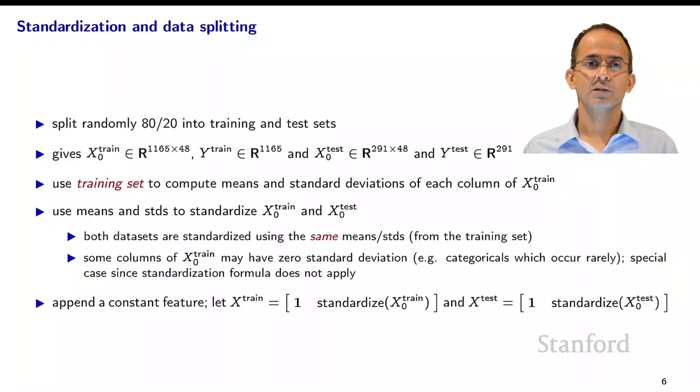Now, when we do the standardization and the data splitting, we do this in a particular way. So we split the data randomly 80-20, 80 percent for training and 20 percent for test. And that gives us an x0 training set and a corresponding y-train, and an x0 test set and a corresponding y-test. Now the way we do standardization is, we use the training set to compute the means and the standard deviations of each of the features. So that means we'll get 48 numbers corresponding to the means of each column of x0 train, and 48 numbers corresponding to the standard deviations of each column of x0 train. And now we can use the means and standard deviations to standardize x0 train, simply by subtracting off the means and dividing by the standard deviations. And we use the same means and standard deviations to standardize the test set.